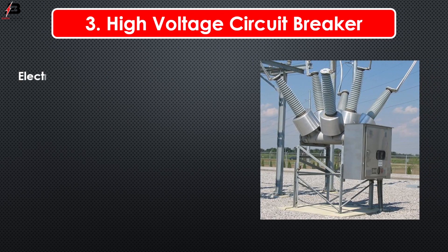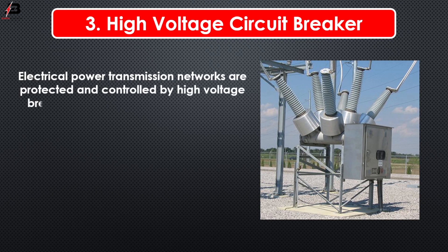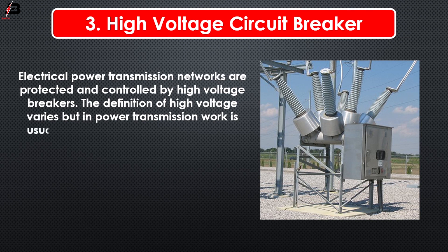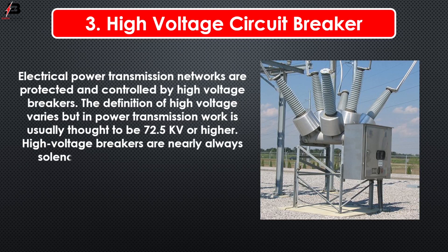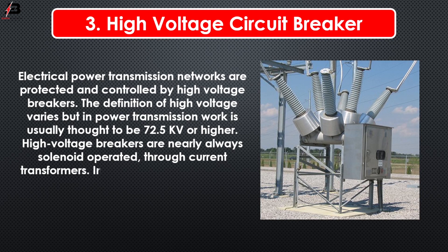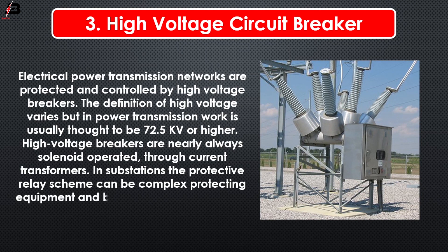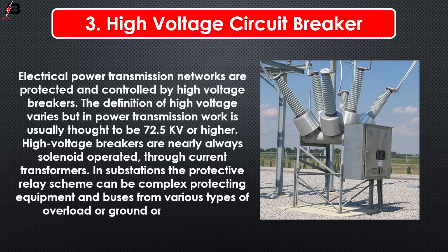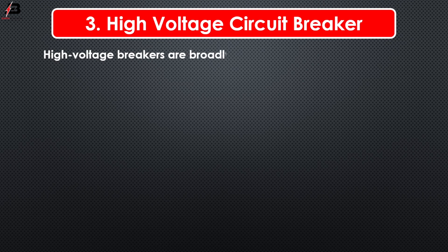High voltage circuit breakers. Electrical power transmission networks are protected and controlled by high voltage breakers. The definition of high voltage varies, but in power transmission work it is usually considered to be 72.5 kilovolts or higher. High voltage breakers are nearly always solenoid operated through current transformers. In substations, the protective relay scheme can be complex, protecting equipment and buses from various types of overload or ground fault. High voltage breakers are broadly classified by the medium used to extinguish the arc.